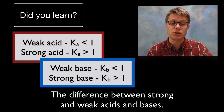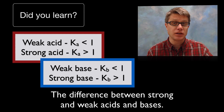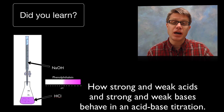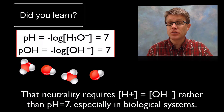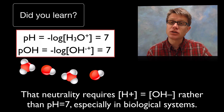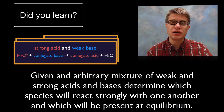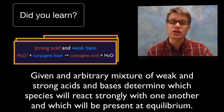Did you learn the difference between a strong and weak acid or base — remembering that it's based on the equilibrium constant? Did you learn how strong and weak acids behave in titration reactions? Did you learn that neutrality — a pH of 7 — requires the concentration of hydronium and hydroxide ions to be equal? And did you understand what happens during a titration in each of those three situations? I hope so, and I hope that was helpful.